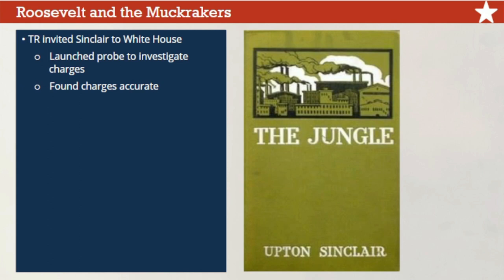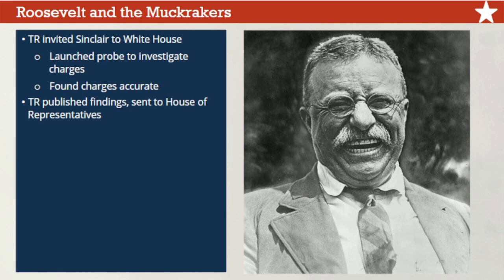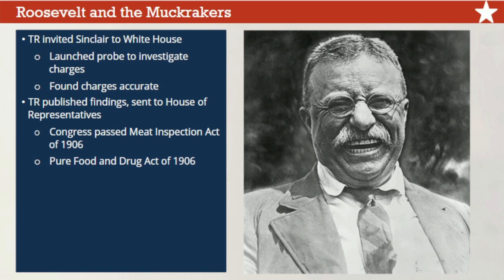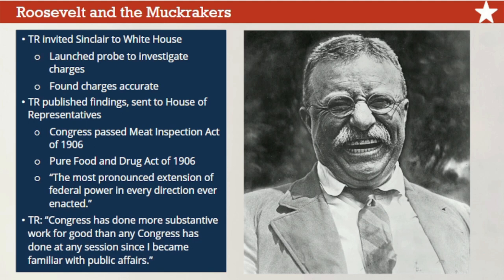Roosevelt called Upton Sinclair a crackpot, but shared the author's disgust at the meat industry and realized it was ripe for regulation. He invited Sinclair to the White House, and the two launched an independent probe to investigate the book's charges. Roosevelt's investigators reported that the stories in The Jungle were largely accurate. Using the power of the bully pulpit, Roosevelt published his team's findings and sent them to the House of Representatives demanding strict rules on meat inspection. Congress yielded and passed both the Federal Meat Inspection Act of 1906 and the Pure Food and Drug Act of 1906. Government would now be in charge of inspecting and guaranteeing the quality of food, drink, and medicine — what one senator called 'the most pronounced extension of federal power in every direction ever enacted.'